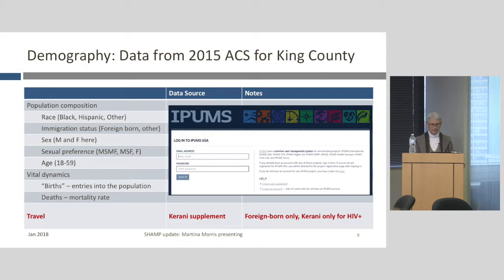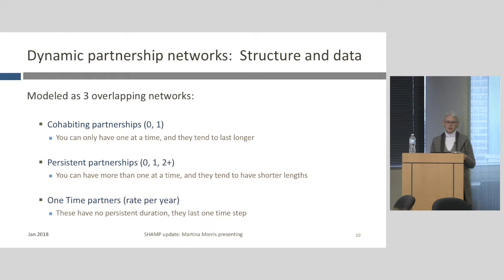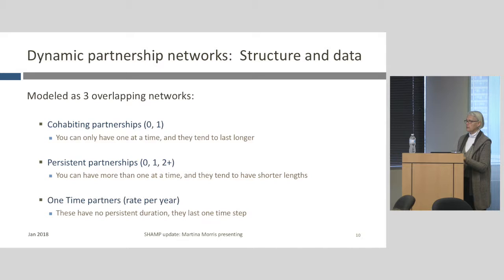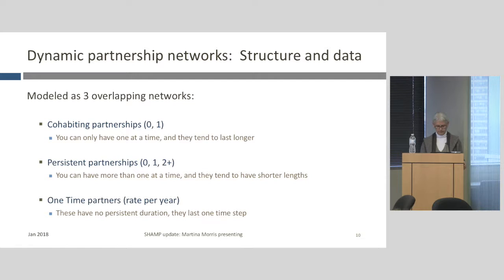For the dynamic partnership networks, this is modeled as three overlapping networks using a stochastic network transmission model. The network itself is modeled independently of the transmission process. The first network is cohabiting partnerships — people can have either zero or one cohabiting partner, and these tend to last longer. The second is persistent partnerships — you can have two or more at a time, with shorter lengths. The third is one-time partners, with a certain rate per year; these last only one time step in the model.